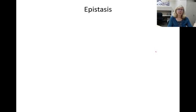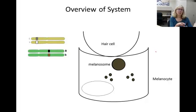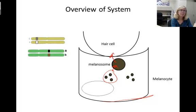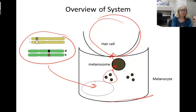Now that you realize many alleles code for non-functional proteins, you'll be better able to understand epistasis. The example in your book is coat color in Labrador retrievers. We use this cartoon of a cell type associated with fur growth in the skin of dogs. The melanocyte cell produces pigment molecules that include melanin. Melanin is packaged in a vesicle called a melanosome, which then fuses with the membrane of the melanocyte and the pigment is deposited in the hair cell above. The genes associated with hair color are two different genes, the E gene and the B gene, found in the nucleus of the cell.